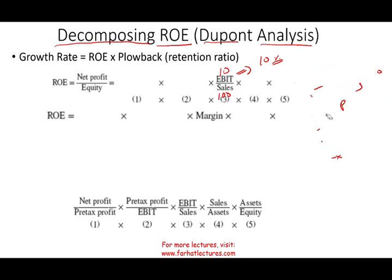Obviously, you want the margin to be higher — the better. To increase the margin, either increase your EBIT without increasing sales, or increase EBIT faster than sales. You want to keep more from the money that you are selling. This is the first component: margin.